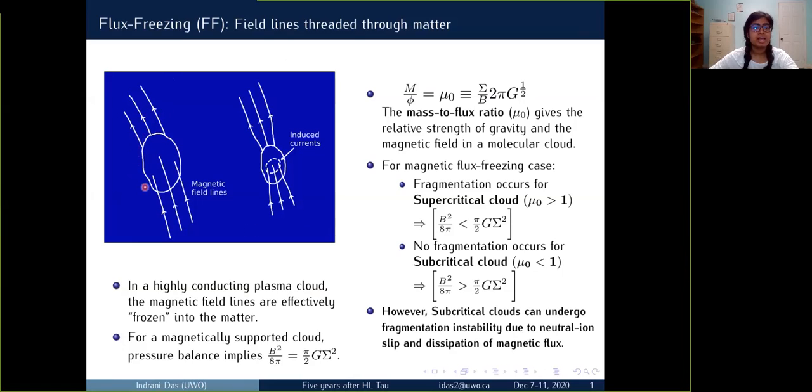In the figure, let's take the patch as a highly conducting plasma cloud. The magnetic field lines are threaded into it as the gravitational contraction generates current that helps the inside magnetic field to grow stronger such that magnetic flux is being conserved. For such a magnetically supported cloud, magnetic energy density should be equal to the self-gravitational energy density. So the relative strength of gravity and the magnetic field in a molecular cloud is generally expressed in terms of a parameter called mass to flux ratio μ₀ and it is written in units of critical value for the gravitational collapse. So the supercritical clouds for which self-gravity dominates over magnetic field, fragmentation occurs for them under flux freezing.